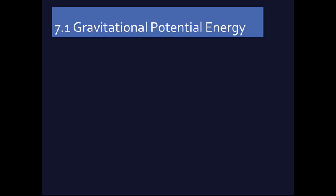As we begin Chapter 7 of Young and Friedman's University Physics, the first section is called Gravitational Potential Energy. Chapter 6 had to do with kinetic energy and work. In Chapter 7, we begin to look at potential energy.